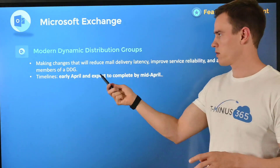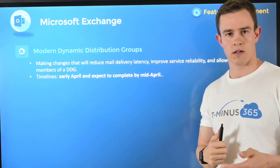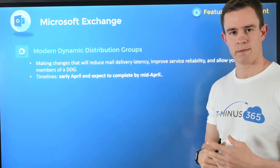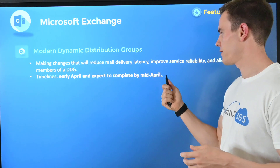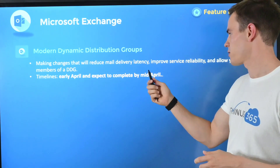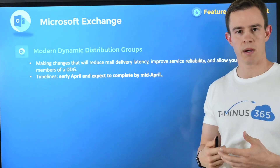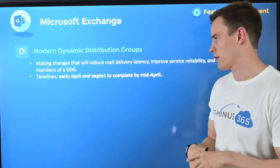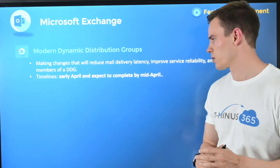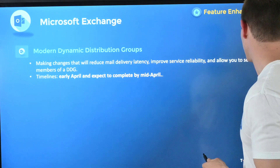Shifting into Exchange, this first one is about dynamic group distribution. Dynamic groups have traditionally had long latency because they're looking up all the members on the fly as that email is being sent, versus storing that information with more intelligence behind it. They're updating this functionality to give you more flexibility on seeing those members of a dynamic group within the experience of sending an email, so you have a bit more compliance control in case you wanted to remove a couple of those members. This will happen in early April and be complete by mid-April.